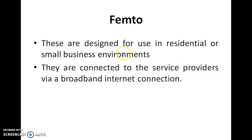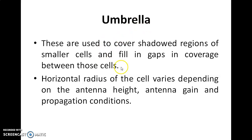Femto cells are designed for use in residential or small business environments. They are connected to the service provider via a broadband internet connection — that is femto. Then umbrella cells: these are used to cover shadowed regions of smaller cells and fill in the gaps in coverage between these cells. We use umbrella cells for shadowed regions.